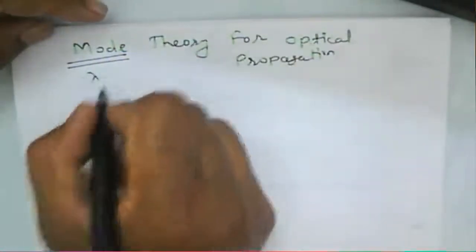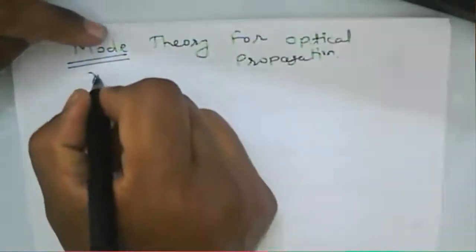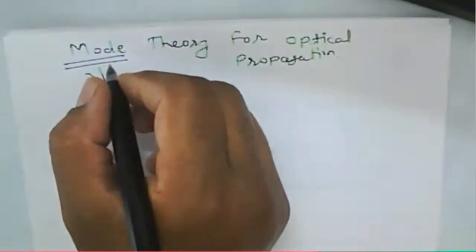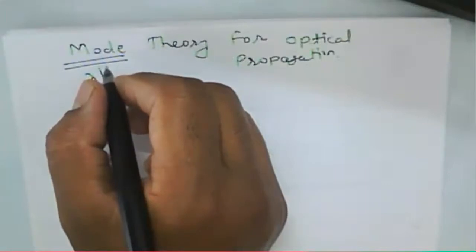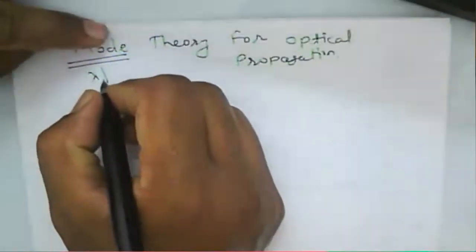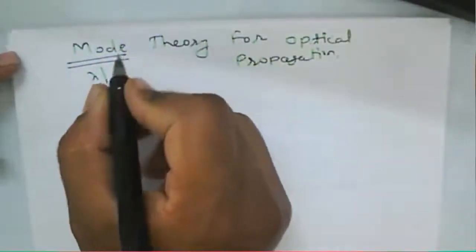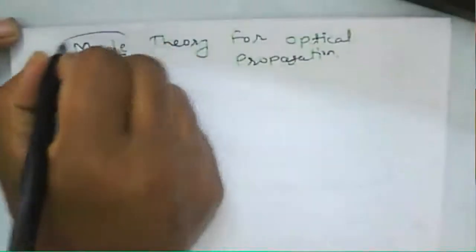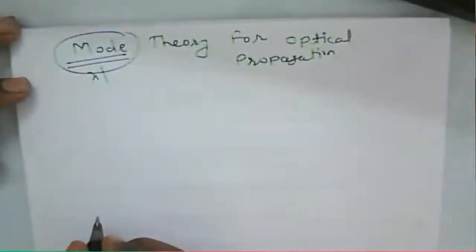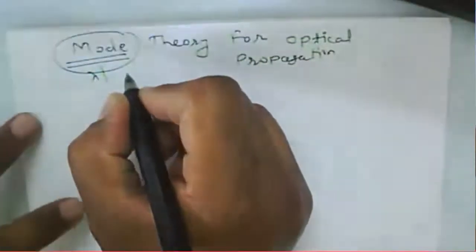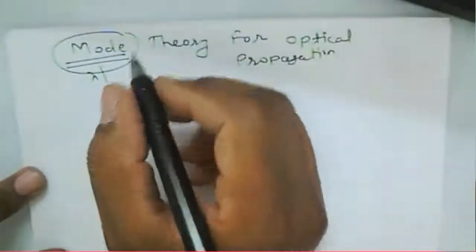Modes are rays reflecting at different cladding boundaries at different places, with variation in wavelength or variation in the particular ray. To understand mode theory for optical propagation, we should know how your wave is generated and how it propagates. You already know propagation of a wave in free space and uniform plane waves.